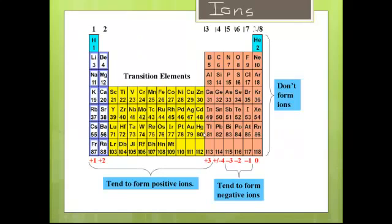In general, families form the same ions. This first family, the alkali metals, form plus one ions. The second family, the alkaline earth metals, form plus two ions.